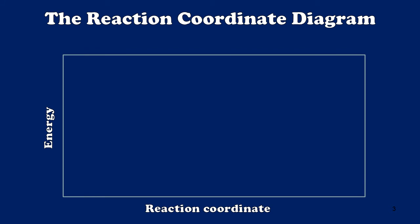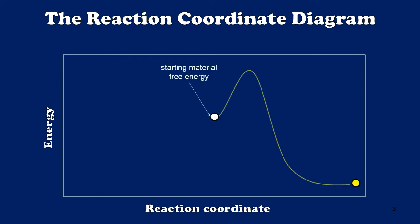Let's begin with a review of the reaction coordinate diagram. A reaction coordinate diagram, as the name implies, is a plot of the reaction coordinate on the x-axis and the energy of a system on the y-axis. So we're monitoring the total energy of a sample as it progresses through a reaction. Typically we begin with a starting material, and if we plot a single step process on a reaction coordinate, we frequently see a profile with a maximum at the transition state energy and a minimum at the product free energy.